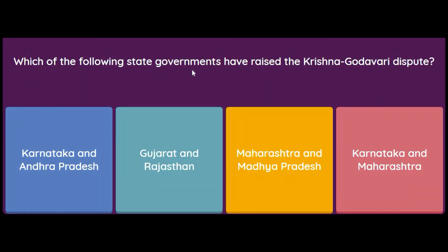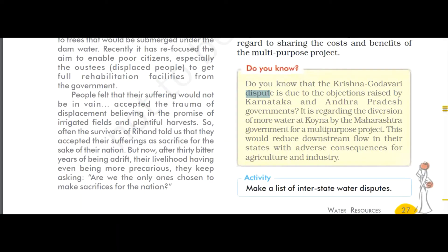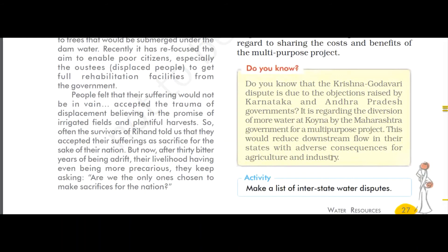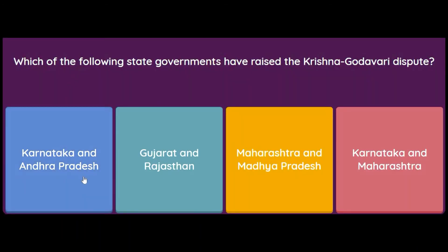Which state governments have raised the Krishna-Godavari dispute — Karnataka and Andhra Pradesh, Gujarat and Rajasthan, Maharashtra and Madhya Pradesh, or Karnataka and Maharashtra? The answer is Karnataka and Andhra Pradesh. As mentioned in the book, the dispute arose due to objections raised by Karnataka and Andhra Pradesh governments regarding the diversion of more water at Koyna by the Maharashtra government for a multi-purpose project, which would reduce downstream flow with adverse consequences for agriculture and industry in those states.